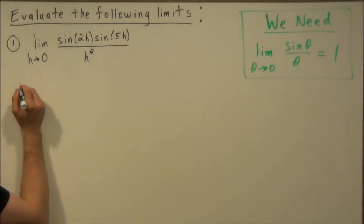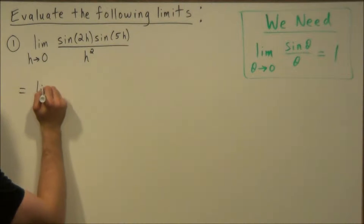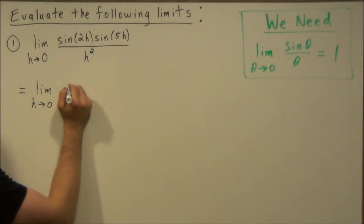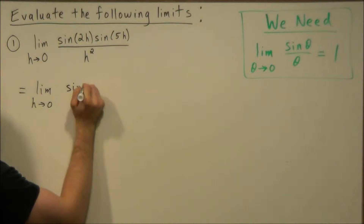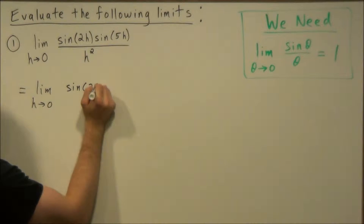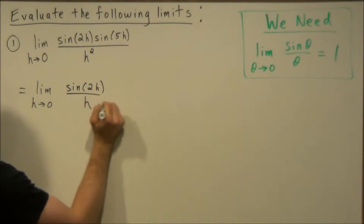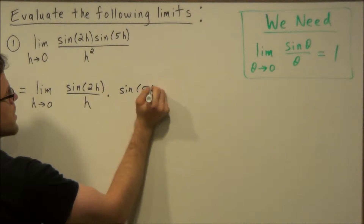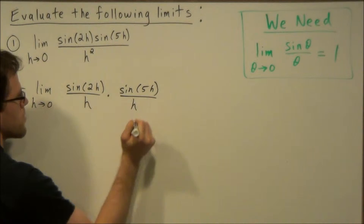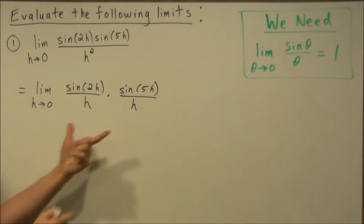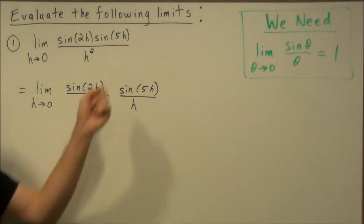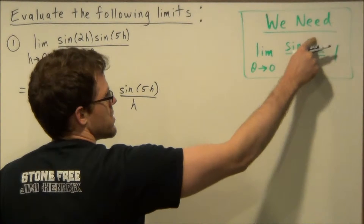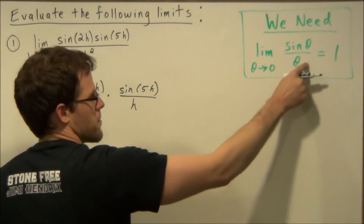The first thing we're going to do is rewrite this as a product of two fractions. We're going to say this is sine two h over h times sine five h over h. We know we did this correctly because if we multiply these two fractions together it brings us right back to the original expression.